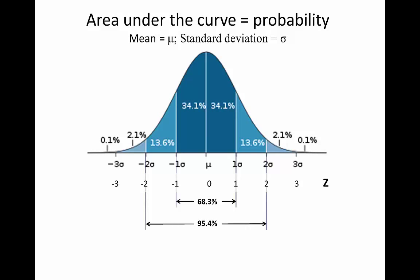Similarly, about 95% are within two standard deviations, and virtually all of the scores are within three standard deviations. There are tables and computer programs that can help us find these values, and we'll look at some of those in a minute.